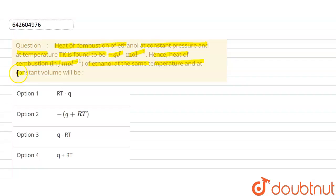Now at constant pressure, the enthalpy change equals the heat that is given in this question, that is minus q joule per mole. Heat exchange at constant pressure equals enthalpy change, ΔH, which is minus q. Heat exchange at constant volume is ΔU, and the question is asking for heat of combustion at constant volume.